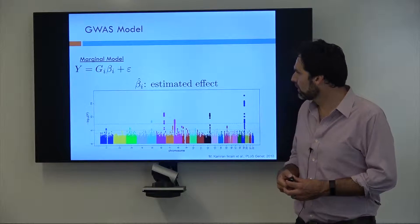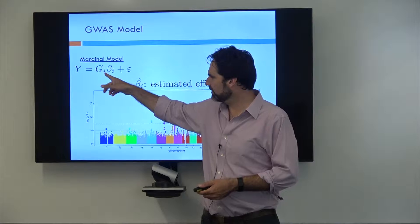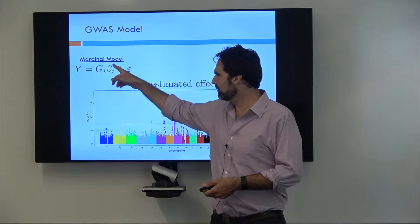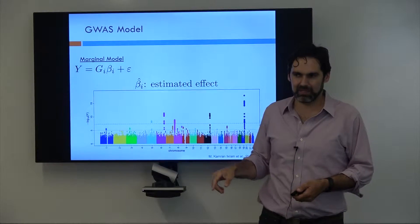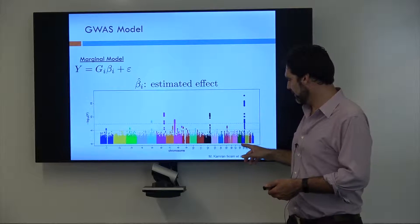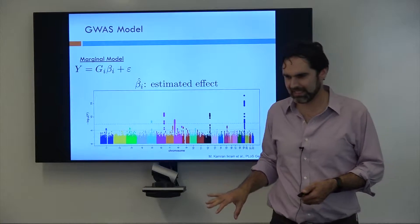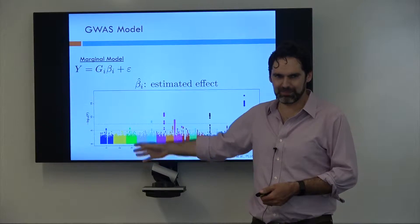When we do GWAS, we take our phenotype like height, we regress it one by one on each variant in the genome, and we get these beta hat estimates. Along with the beta hats we get p-values. A lot of times when a GWAS happens, you're going to see this plot. It gets referred to as a Manhattan plot, because in theory this looks like the skyline of Manhattan.